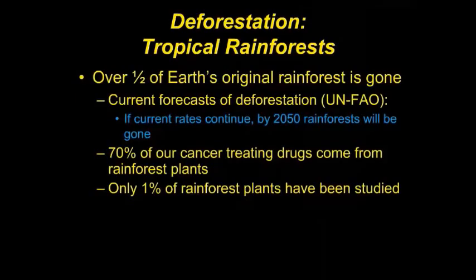Why is this of concern to a local Indianapolis company like Eli Lilly? Many of our cancer-treating drugs actually come from rainforest plants — about 70%. If we remove the rainforest, we're removing the potential source for treating other diseases and for pharmaceuticals and chemicals used to heal. Further, much of the rainforest hasn't even been studied — it's so dense and varied with different layers of life. Only 1% has even been studied, so there's still a lot to learn.